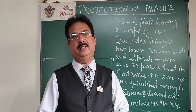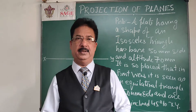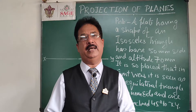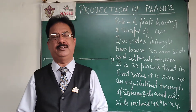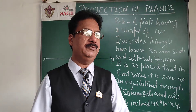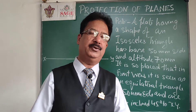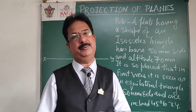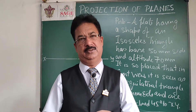So what they are saying is: there will be an isosceles triangle of 50 mm base and altitude 70 mm, placed in such a way that in the front view it looks like an equilateral triangle of 50 mm side, with one side inclined at 45 degrees to the XY line. In this problem, the front view figure will be converted from an isosceles triangle into an equilateral triangle. As I told you earlier, the second figure will be in our control, so from the first figure I can manage the size of the second figure.